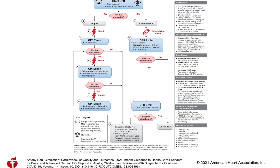A HEPA filter should be securely attached to any manual or mechanical ventilation device along the exhalation port, before all ventilation devices such as — but not limited to — bag mask valve, supraglottic airway devices, endotracheal tubes, and ventilator mechanical circuits. Alternatively, a low dead space viral filter, or a heat and moisture exchanging filter with above 99.99% viral filtration efficiency, may be placed between the ventilation device and the airway. The viral filter or heat and moisture exchanging filter should remain attached to the airway when changing ventilation devices.